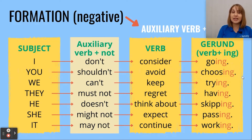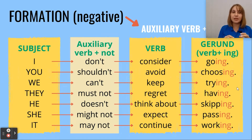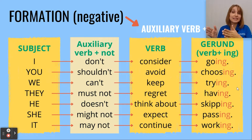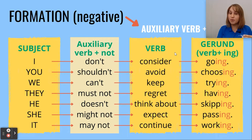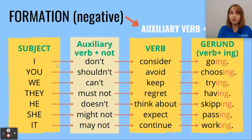Since today we are discussing the negative form, let's look first at its formation. The structure is a little complex because it has several parts. We start with the subject, then an auxiliary verb with a negative particle 'not.' Then we use the main verb and a gerund. The gerund is a verb plus -ing. Let's look at our example sentences.